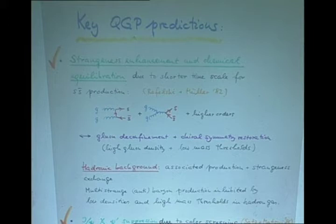The first prediction is strangeness enhancement and the approach to chemical equilibrium between up, down and strange quarks in heavy ion collisions. The mechanism is a shorter time scale for the production of strange quark pairs by gluon fusion. This is a direct consequence of the gluon deconfinement in the quark-gluon plasma, which leads to high gluon densities, and chiral symmetry restoration.